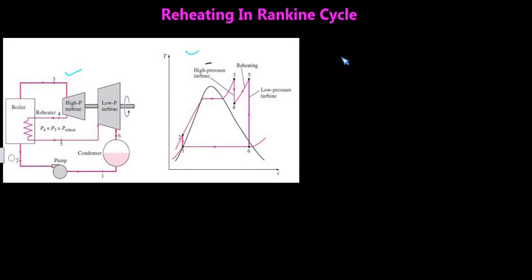Process 2 to 3 is the heat addition process in the boiler — a constant pressure heat addition, as seen from the T-S diagram. Then 3 to 4 is the expansion in the high pressure turbine. The key difference between the simple Rankine cycle and the reheating Rankine cycle is that after expansion in the high pressure turbine...